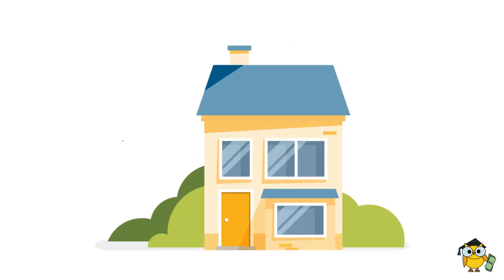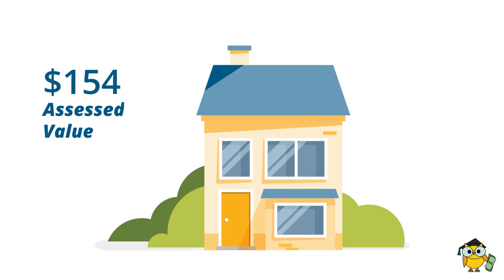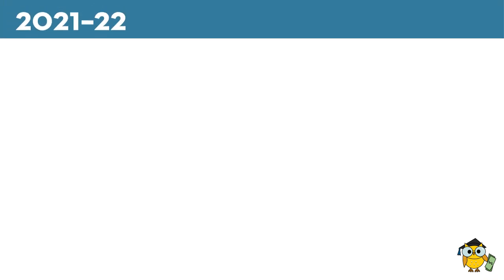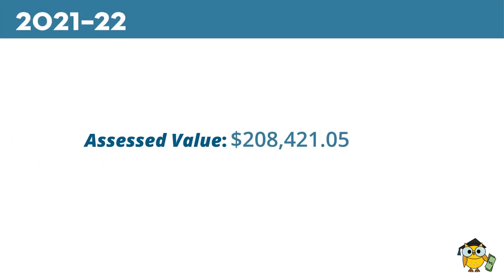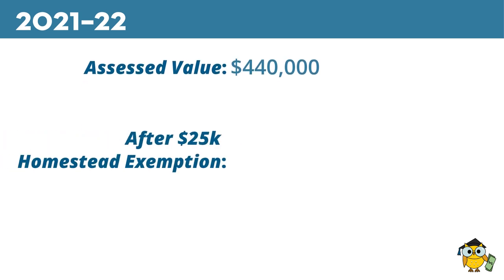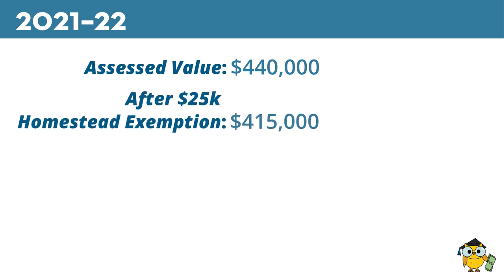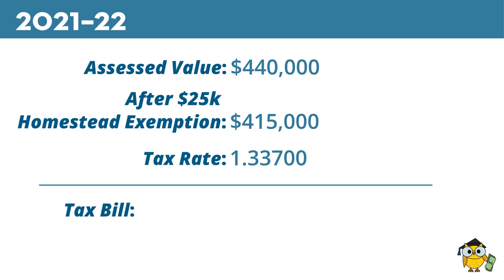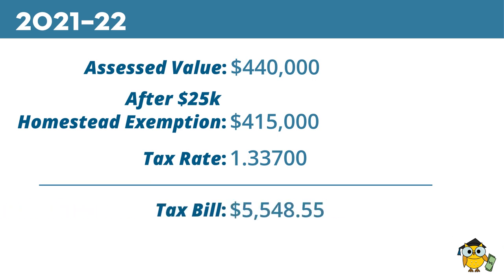So what does all of this mean to the taxpayers of our community? In an example using the averaged assessed value found in the school district — roughly $440,000 — let's compare tax bills. In 2021-22, if this house was the owner's principal residence and they qualified for a homestead exemption, this $440,000 was reduced by $25,000 to $415,000. Applied to the 2021-22 tax rate of 1.33700, this equates to a tax bill of $5,548.55, or $462.38 split up over twelve months.